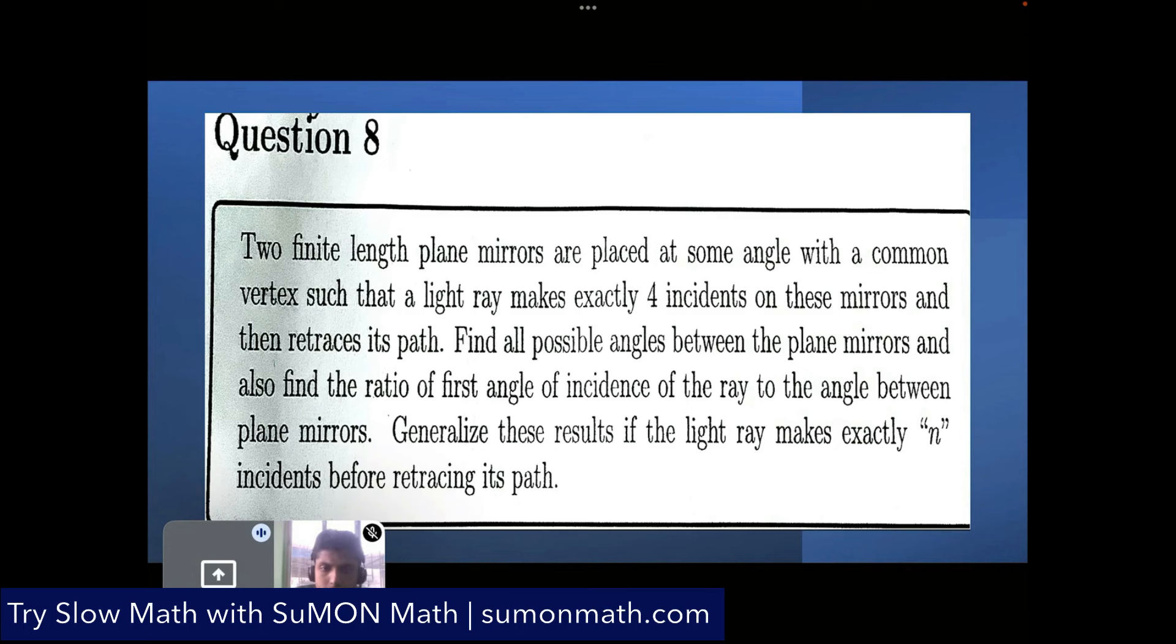When we shine a laser or some light ray, it makes exactly four incidents after reflecting off the mirrors and then it retraces its path. So we have to find all possible angles between the plane mirrors and we have to also find the ratio of first angle of incidence of the ray to the angle between the plane mirrors. Finally, we have to generalize these results if it makes n incidence before retracing its path.